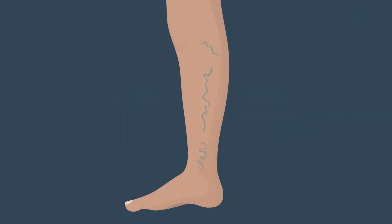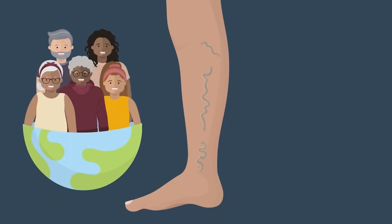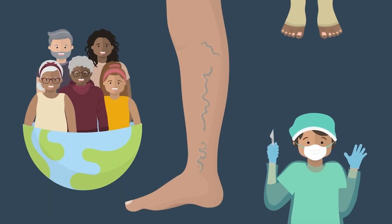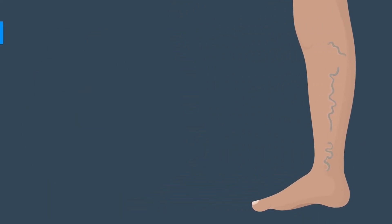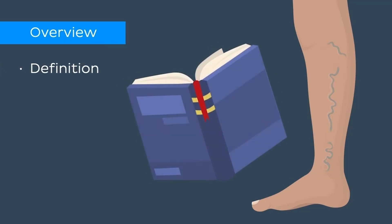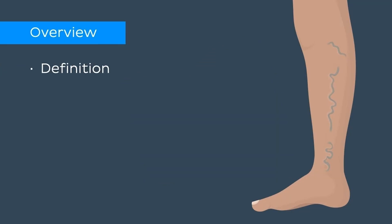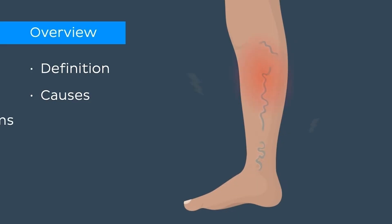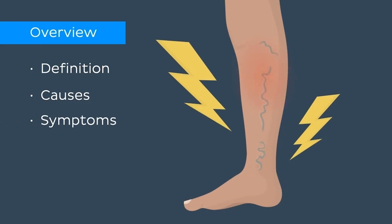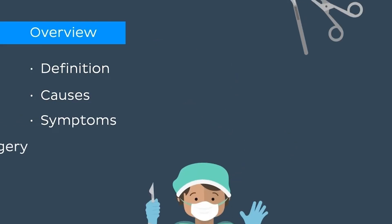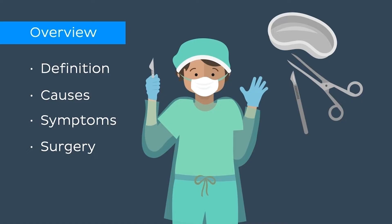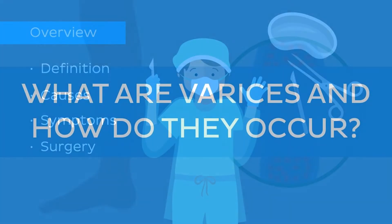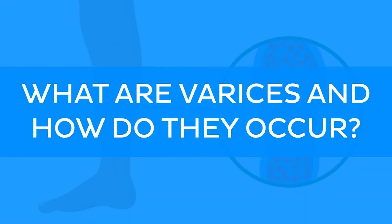Varicose veins are fairly common in certain populations and there are several ways to treat them. In this video, we'll help you understand what varices are and how they occur, what the different types of varices are, as well as what symptoms they cause. And in the end, we're going to describe the most common surgical ways of treating them and how they can be prevented. Now let's start by answering the question: what are varices and how do they occur?